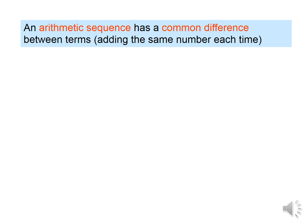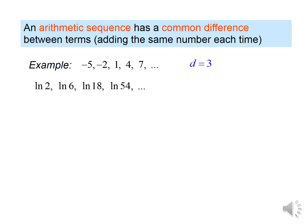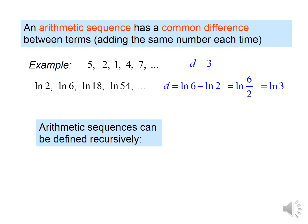You can also look at arithmetic sequences, though we will not do a lot with them in this class. An arithmetic sequence has a common difference, meaning you're adding the same number each time. To find the common difference, you subtract two of the terms. We can define an arithmetic sequence recursively as well as explicitly.